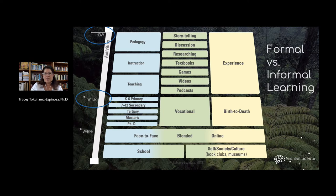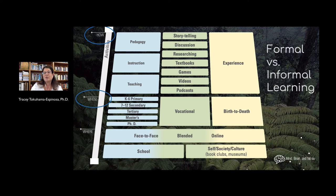When does learning occur? We formally decide that learning occurs within schools — pretty much kindergarten until you finish high school or go to college, so perhaps from ages three, four, five, or six all the way until you're 18, maybe 24 or 25 years old. But within the context of informal structures, it's really from the moment you are conceived until you die. Informal learning occurs throughout the lifespan.